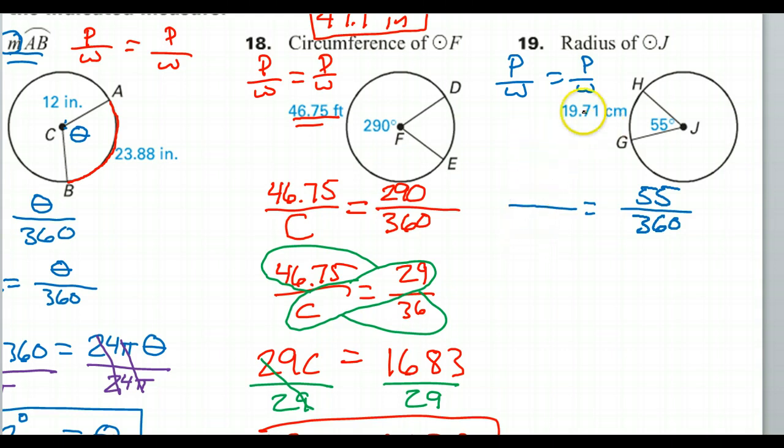Well, yes we do. We have the partial length, the arc length of 19.71, so that would go here, the partial length. Now what goes here is the whole length, also known as the circumference. So I'm just going to put a big C here.